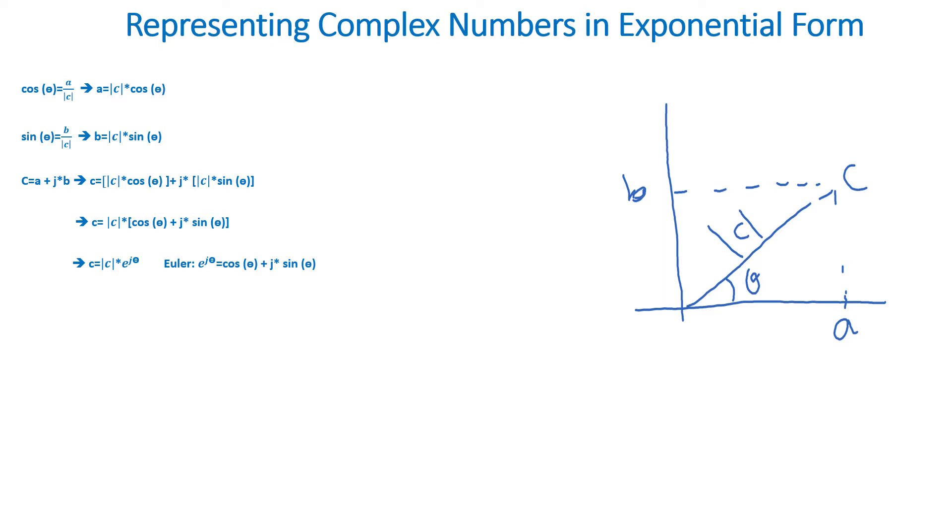As we know, Euler's identity is E to the power of J times theta equals cosine theta plus J times sine theta. So C equals the magnitude of C times E to the power of J times theta. This is the exponential form. Basically, you take a complex number C equal to its magnitude times E to the power of J times theta.